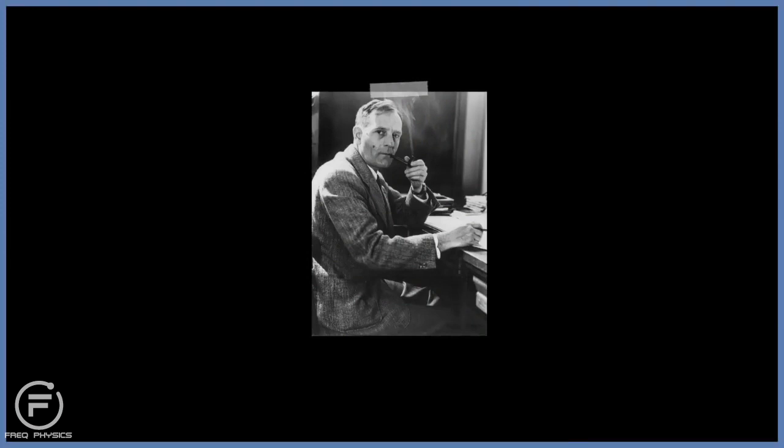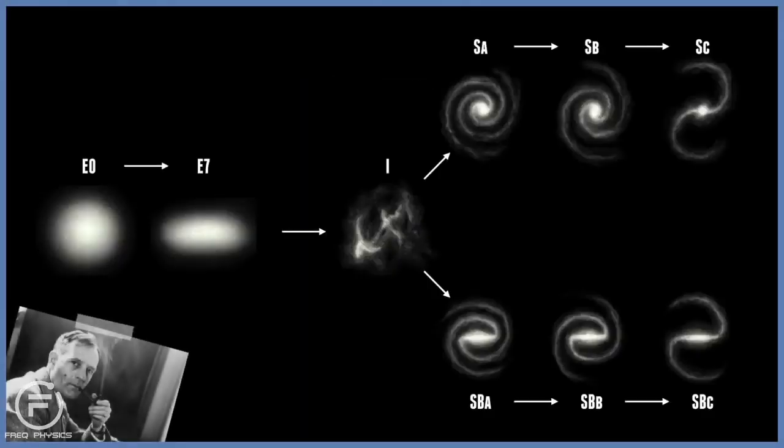It all started in 1924, when astronomer Edwin Hubble proved that galaxies are very distant objects that each contain millions or billions of stars bound together by gravity. Within a few years, he set up a system to classify these galaxies, and we still pretty much use the same classification to this day, with some modifications and additions.